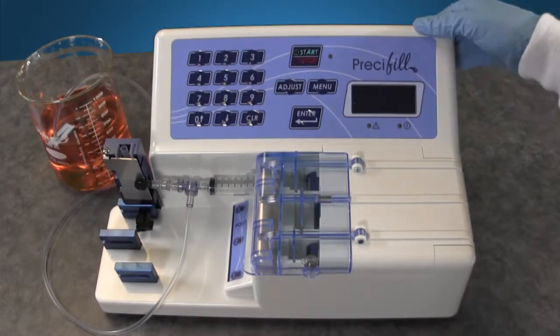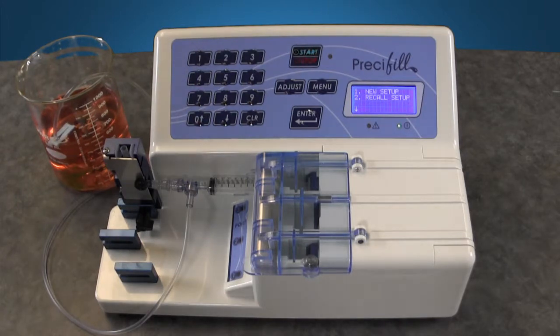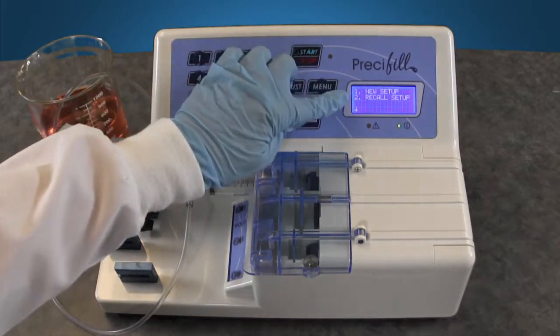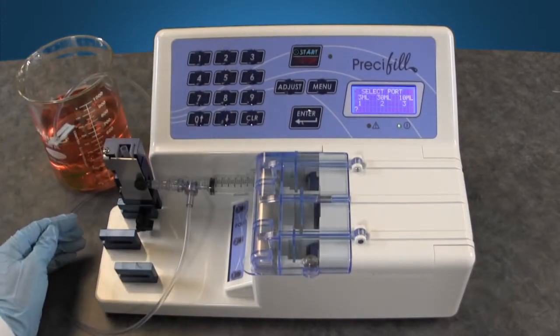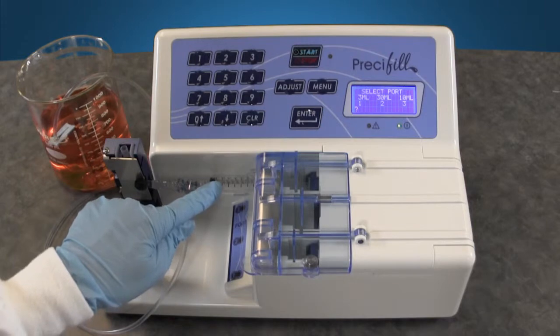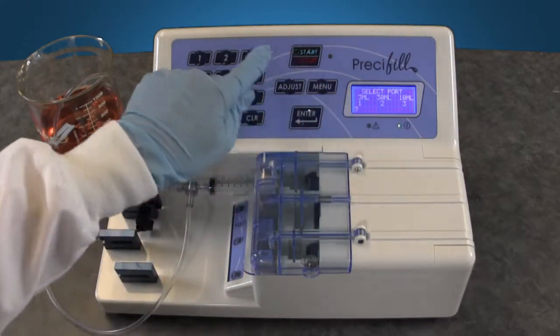Turn on the pump using the on-off switch at the back. The software screen will light up. You can begin programming the pump following the display screen prompts. You will be able to select New Setup or Recall Setup. Press 1 on the numerical keypad. Select your port. We are using a 10 mil syringe which reflects port 3. Press 3 and enter.